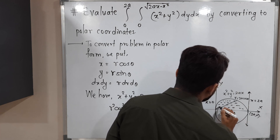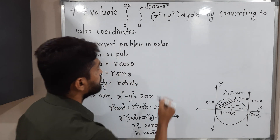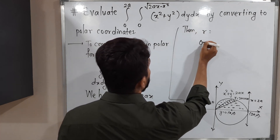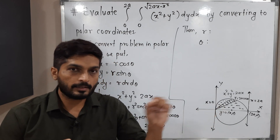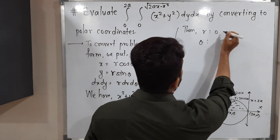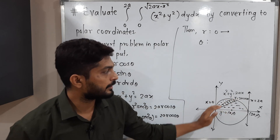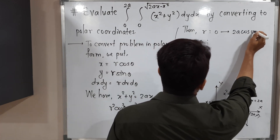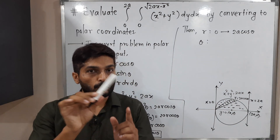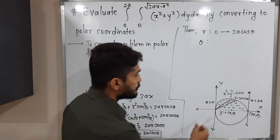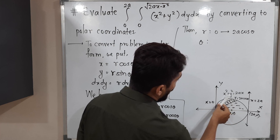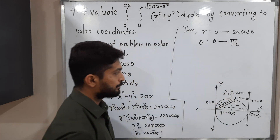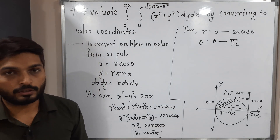Now we find the limits of r and θ. We draw a strip starting at the origin. The strip is bounded below by r = 0 (the origin) and goes up to the circle r = 2a cosθ as the upper limit. The strip must rotate to cover the entire region, moving from θ = 0 to θ = π/2. So I = integration with θ from 0 to π/2.